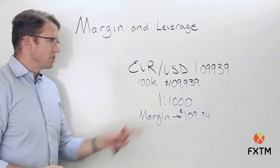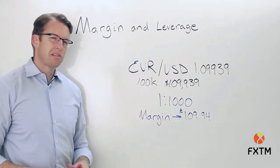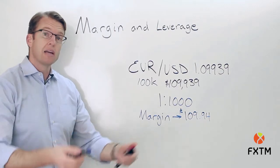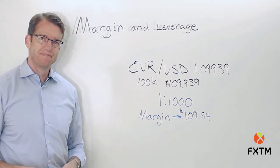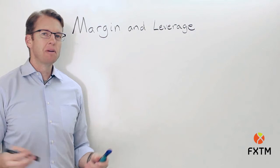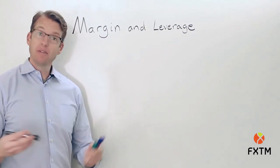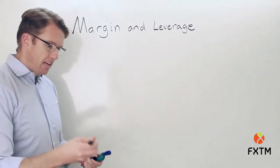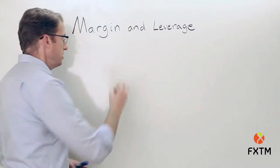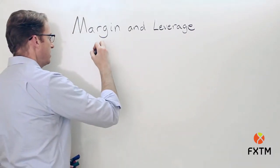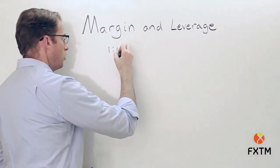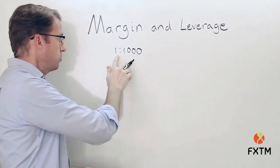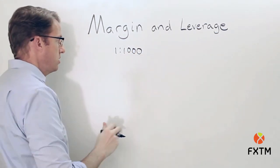Now this is a pretty straightforward example. Let's make this a little bit more advanced, as a trader is actually adding positions to their portfolio. Let's assume that the margin requirement is based on a leverage ratio of 1 to 1,000.